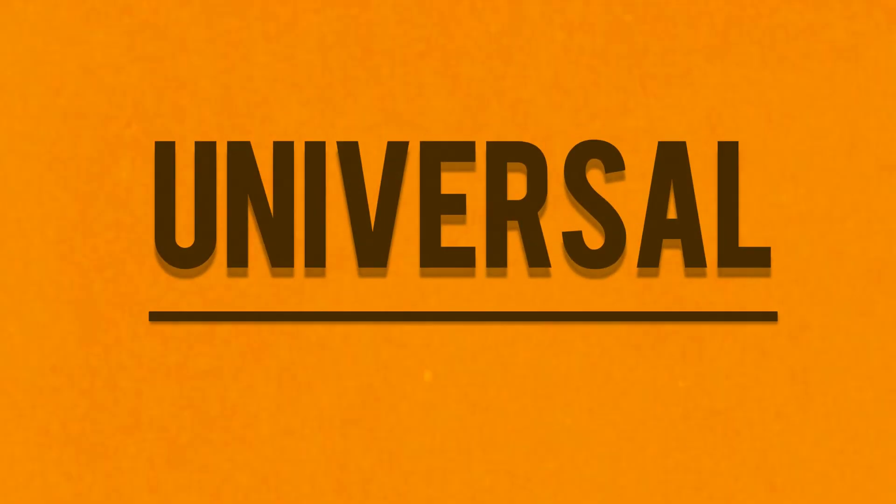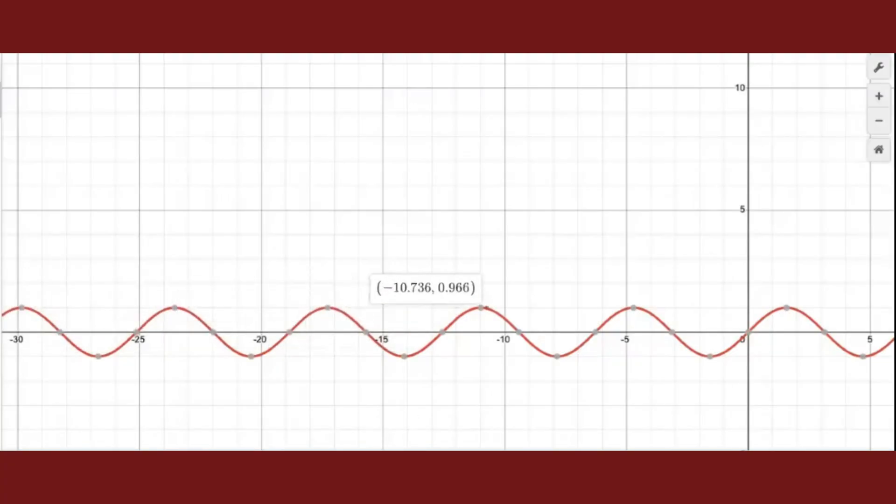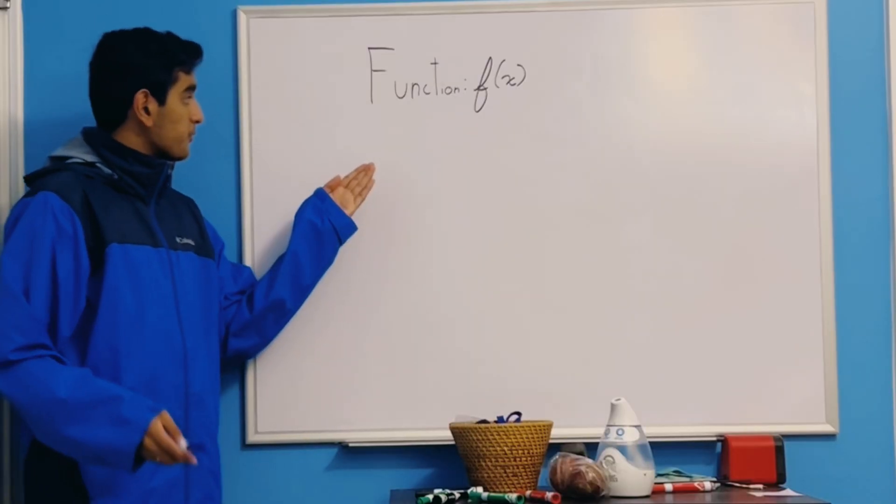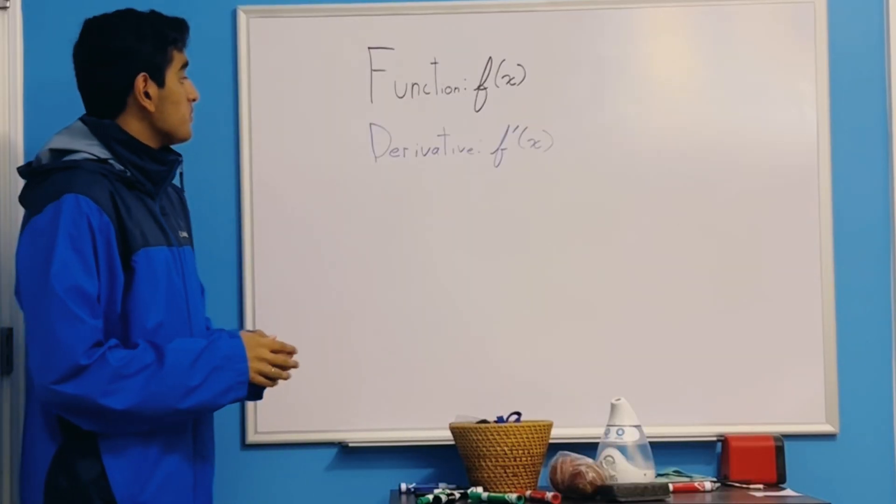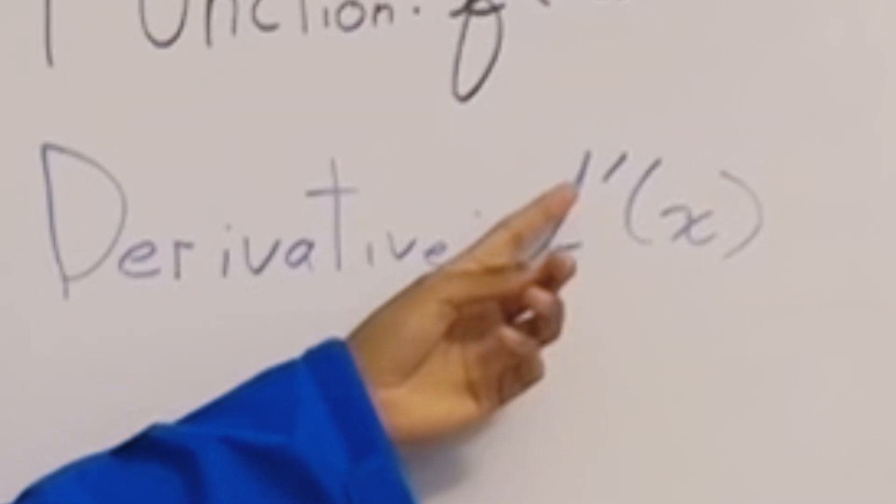In contrast, derivatives are universal, and you can find the rate of change at any point with it, but they're also defined as a function. So if we have the function f of x, then the derivative is notated as f' of x, which is a little apostrophe on top.